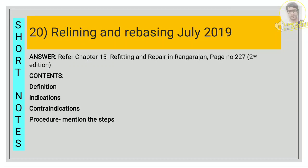For relining and rebasing, refer chapter 15, refitting and repair, page number 227. First define relining, then rebasing, then mention the indications and contraindications, and the procedure steps. There are three main headings: static, functional, and chair-side — all these should be mentioned.